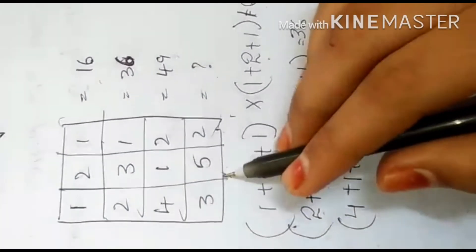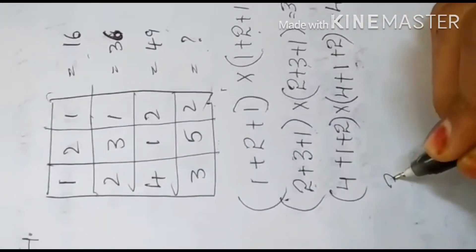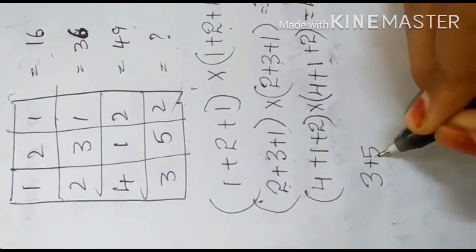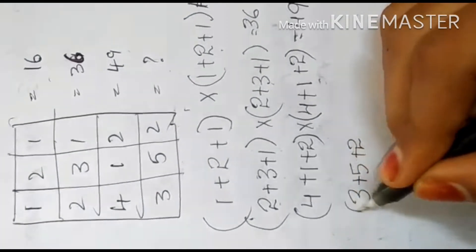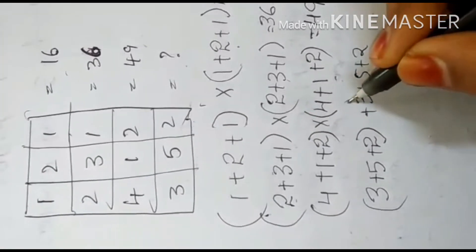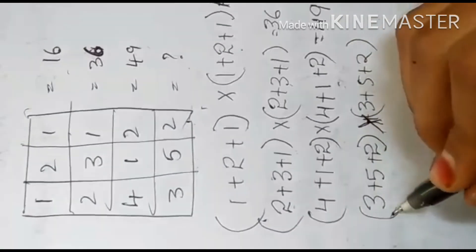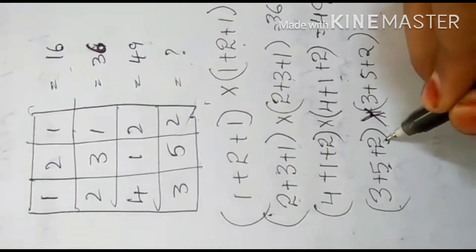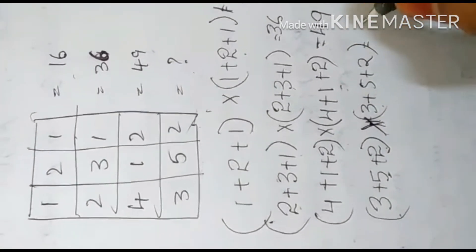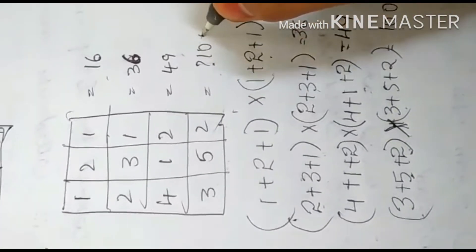We should find this, okay, 49. We should find this. 3 plus 5 plus 2 in brackets, into 3 plus 5 plus 2 in brackets. This is into, not plus. 3 plus 5 is 8, 8 plus 2 is 10. 10 into 10 equals 100. Here, our answer is 100.